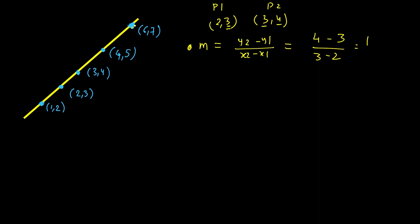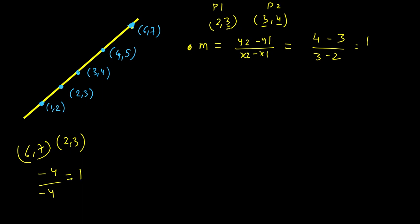If you pick another pair of points, say (6, 7) and (2, 3), you get (3 - 7) / (2 - 6) = -4 / -4 = 1 again. So you can pick any pair of points on this line and you will always get a slope of 1. That is how we check if all the points are collinear.